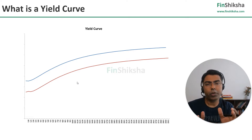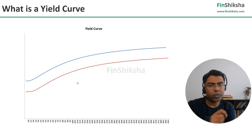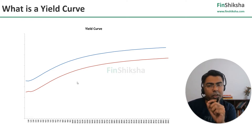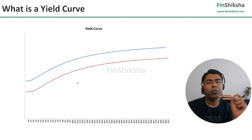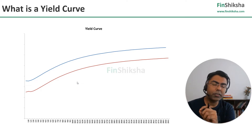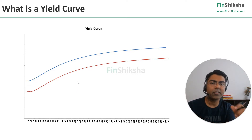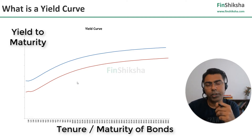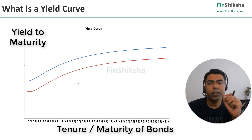For example, the Government of India would have issued multiple Bonds — 1 year, 2 years, 5 years, 10 years, 30 years — depending on the spectrum. Hypothetically speaking, whatever is the YTM of these Bonds, if you plot this on a curve where on the X axis you have the tenure and on the Y axis you have the Yield to Maturities, this representation is called the Yield Curve.